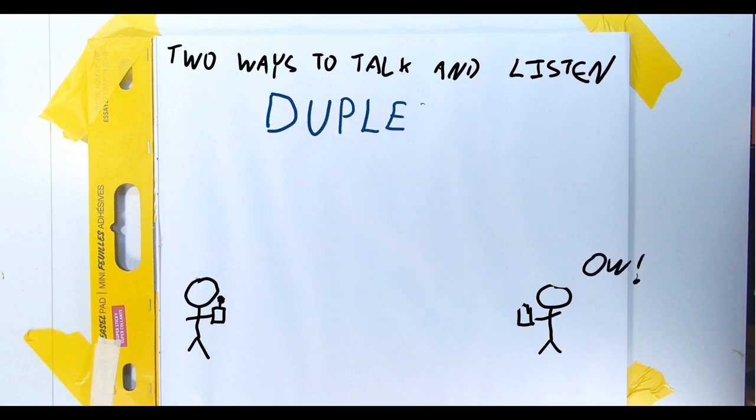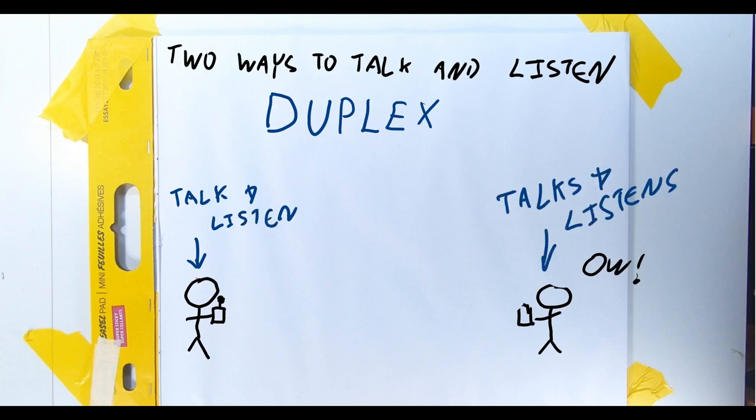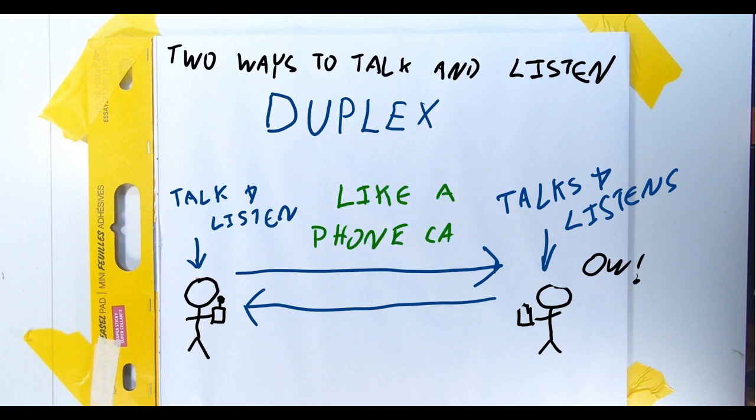Duplex is the other important mode. In this mode, both radios can talk and listen at the same time. No one actually likes talking on the phone, but when a conversation is happening on one, it's in duplex. Both stations can talk, both stations can listen, simultaneously.